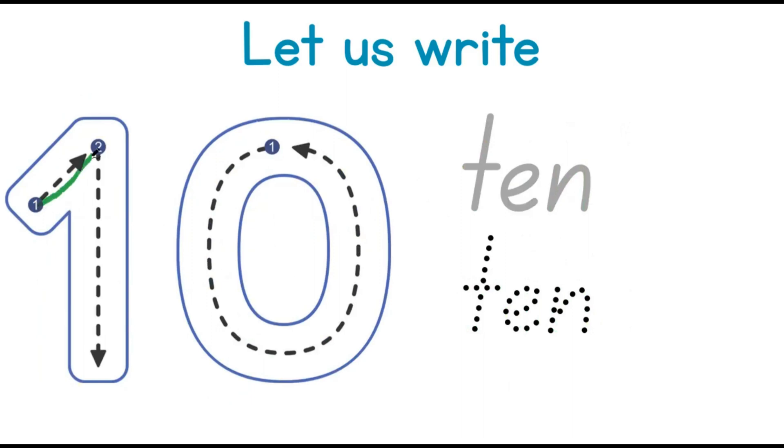Ten. One, two. One. Ten is a double digit number. This means that it has two digits. A one and a zero. One and zero make the number ten.